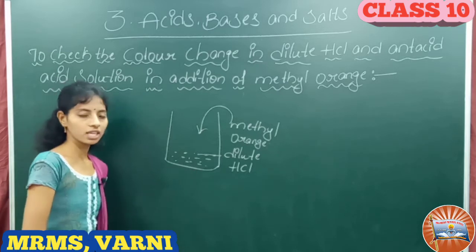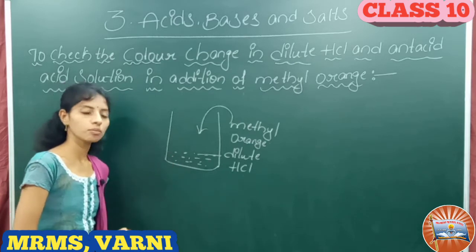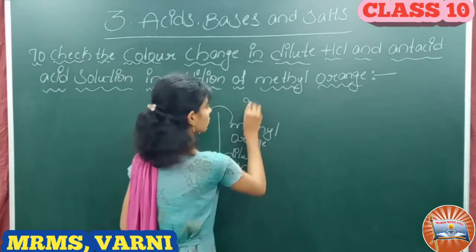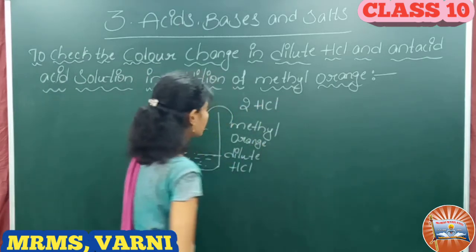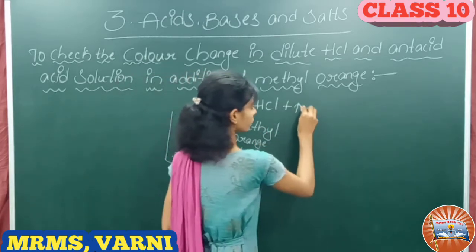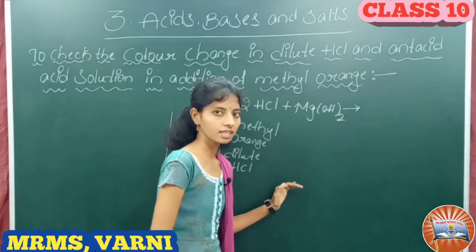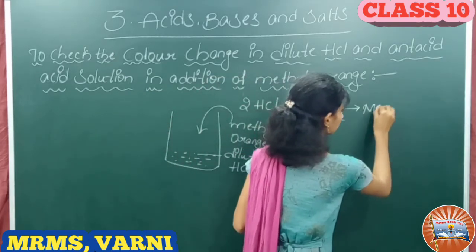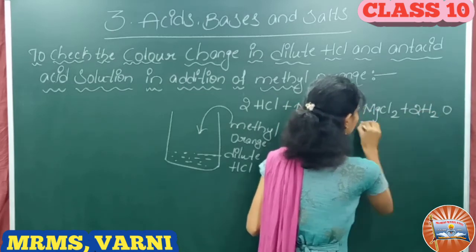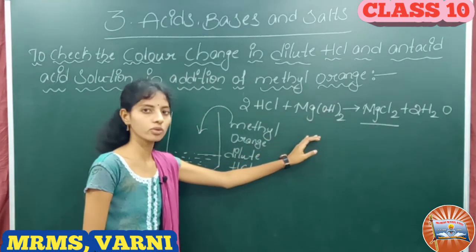What is the chemical reaction that takes place here? When we are adding antacid tablet powder to the red color solution, the color of the solution is changed into slightly yellow. That is because the antacid tablet powder contains magnesium hydroxide.